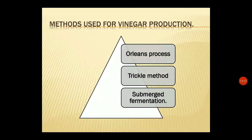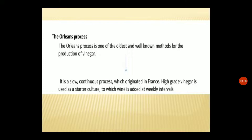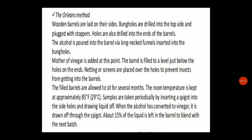There are three methods for vinegar production: the Orleans process, the trickle method, and submerged fermentation. The Orleans process is one of the oldest and well-known methods for vinegar production. It is a continuous process which originated in France, where high-grade vinegar is used as a starter culture, to which wine is added at weekly intervals.